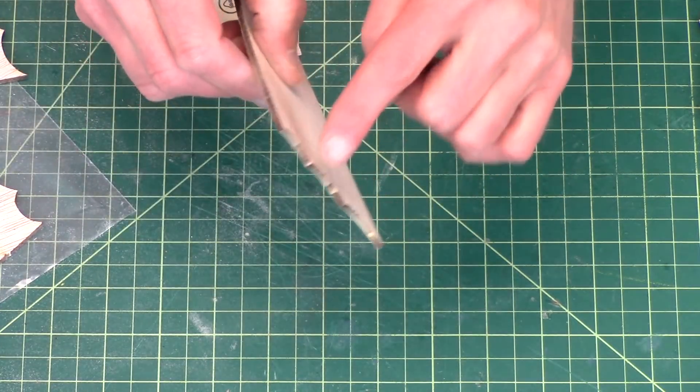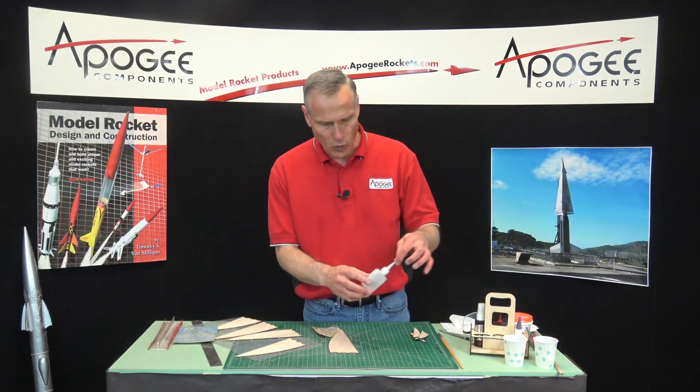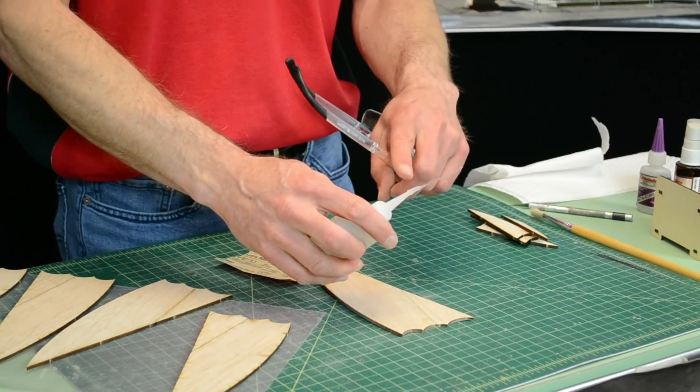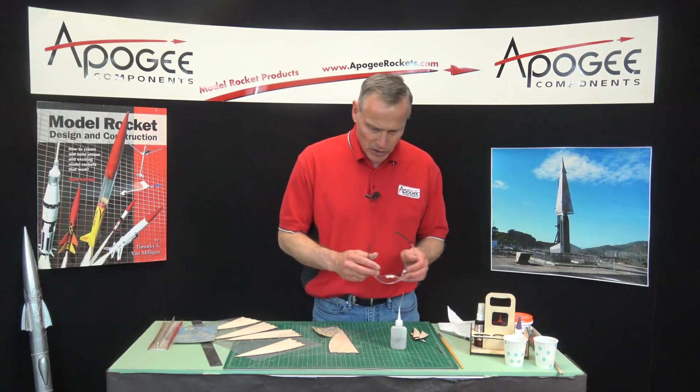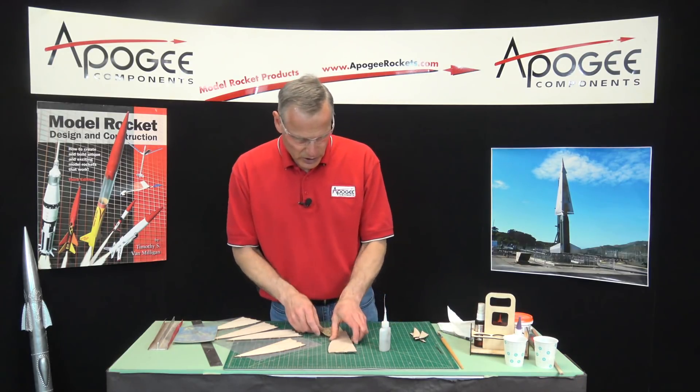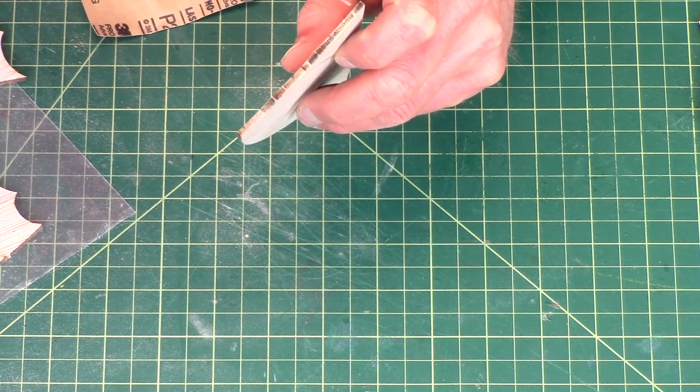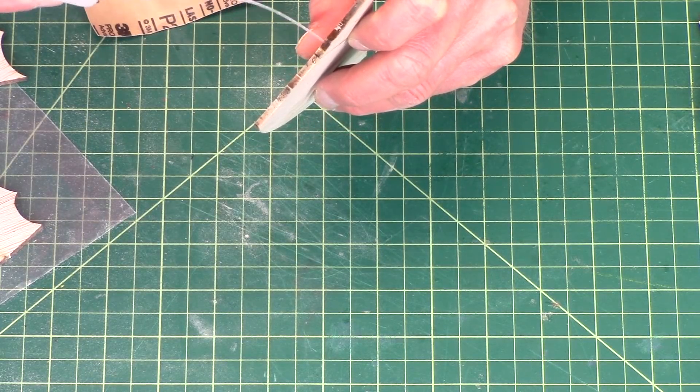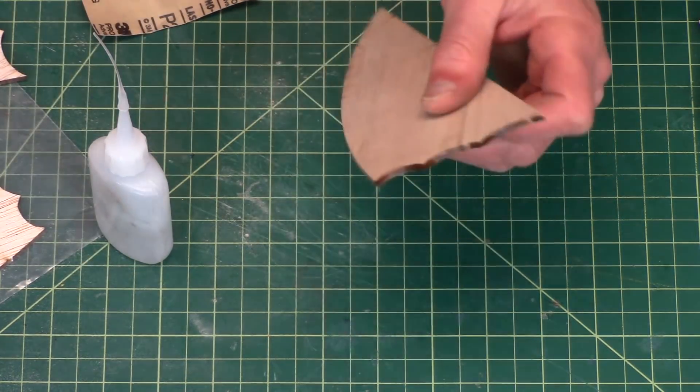On the edges I like to use super glue. I have some water thin super glue here and I like the little applicator tip. I'm just testing it to make sure it's coming out. Whenever you're using water thin super glue, wear goggles because you don't want it splashing in your eye.